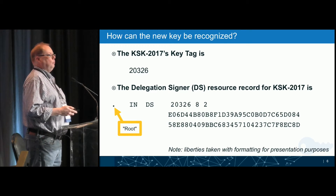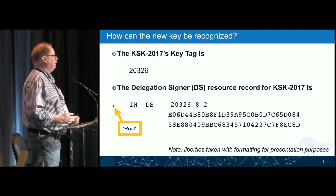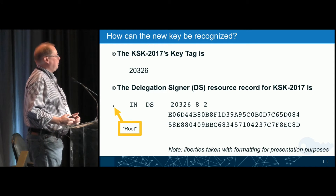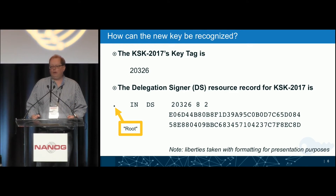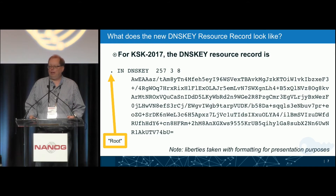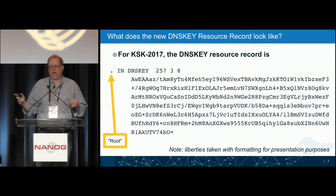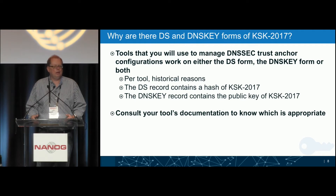Looking at the key tags in DNSSEC, 20326 will be the new key tag. If you pull out the key tags with DNSSEC tools and it's not that, it's not the new key. Below this is what the key would look like in a DS record — there isn't really a DS record for the root zone, but I'm using this convention to show the contents. The bottom two lines are the hash used by some tools. The DNSKEY record is what you'll see in the DNS after July 11th — that is the embodiment of the public key you should be looking at. These slides have been verified and match exactly what was submitted, so you can use them as reference.